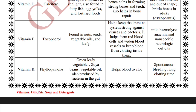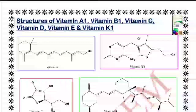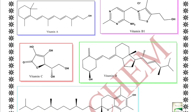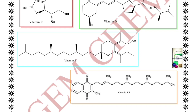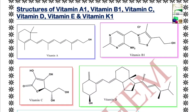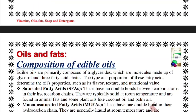The structures of vitamins are very important. The first structure shown is vitamin A, the second is vitamin B1, the third is vitamin C, followed by vitamin D, vitamin E, and vitamin K1. You need to be able to draw these structures carefully.